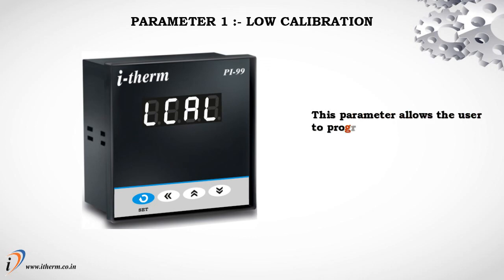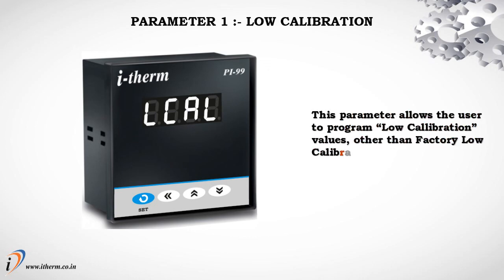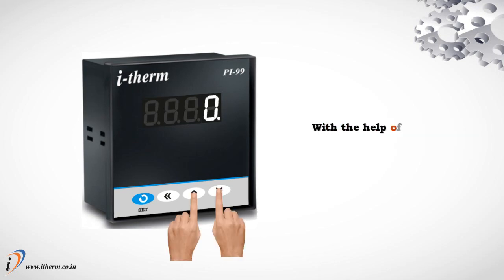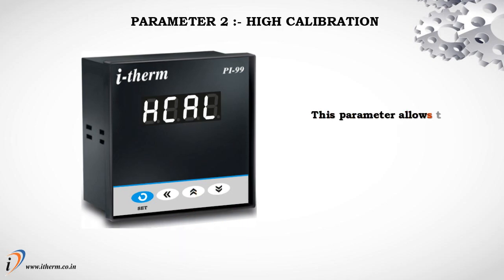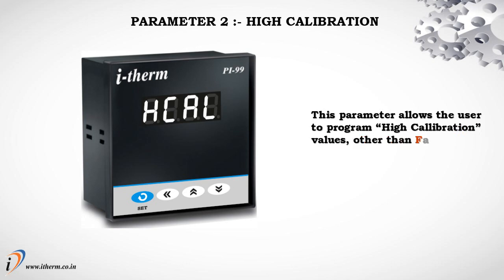Parameter 1: Low Calibration. This parameter allows the user to program low calibration values other than factory low calibration values for the selected input type. Parameter 2: High Calibration. This parameter allows the user to program high calibration values other than factory high calibration values for the selected input type.